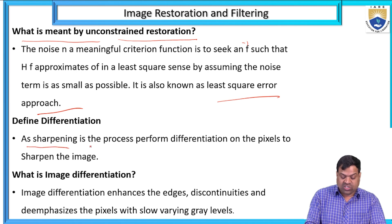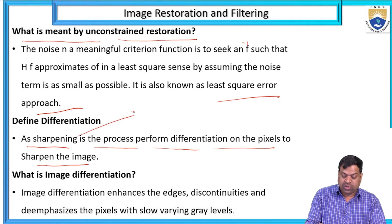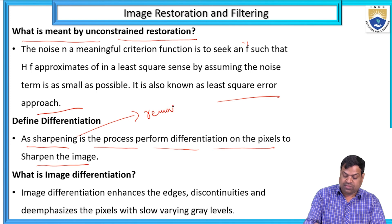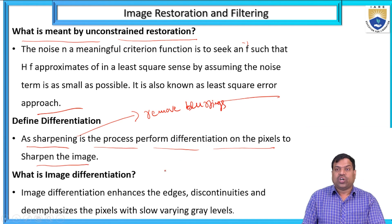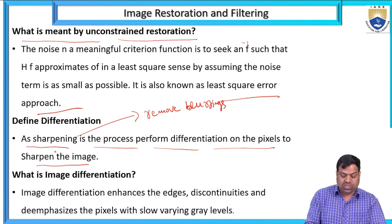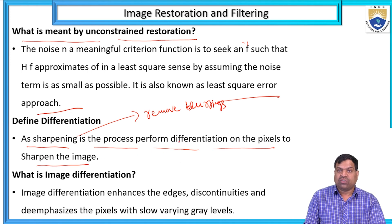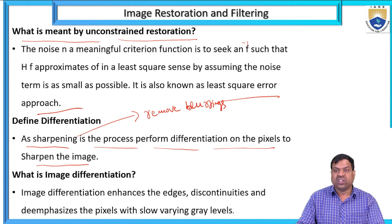Define differentiation. Sharpening is a process that performs differentiation on the pixels to sharpen the image. Image differentiation enhances edges, discontinuities, and de-emphasizes pixels with slow varying gray levels. That is called image differentiation.